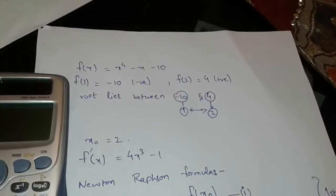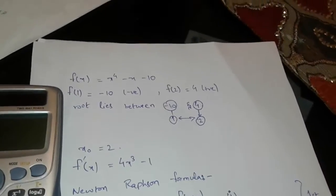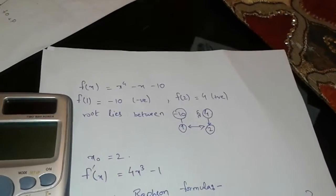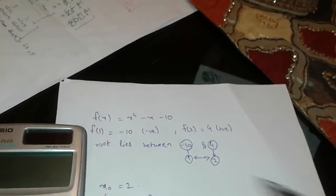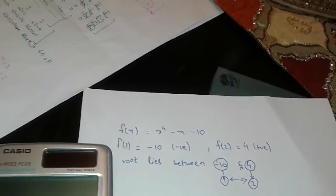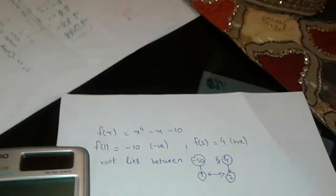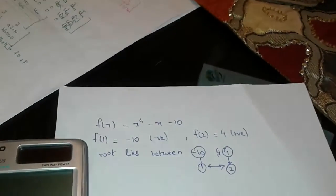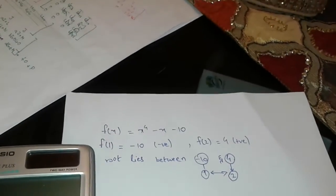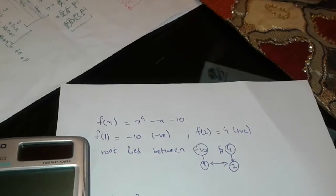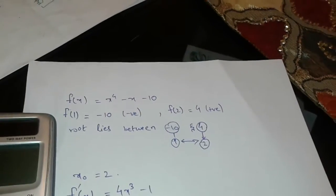Today I am going to explain the Newton-Raphson method. Let's take a question. The equation is x to the power 4 minus x minus 10, which equals f of x. Let's take some initial guesses.